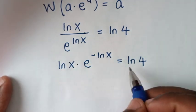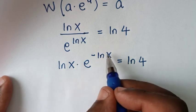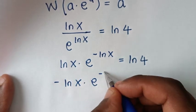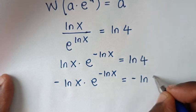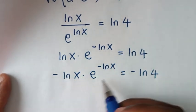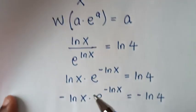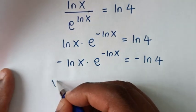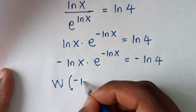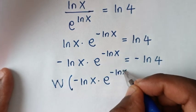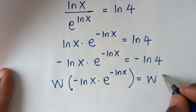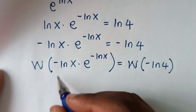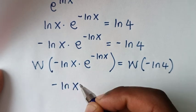We have positive ln(x) here, so we'll apply negative on both sides to make it match the Lambert W form. It becomes negative ln(x) times e to the power of negative ln(x) is equal to negative ln(4). This is now in the form a·e^a, so we apply the Lambert W function on both sides: W of (negative ln(x) · e^(negative ln(x))) equals W of (negative ln(4)), giving us negative ln(x) equals W(negative ln(4)).